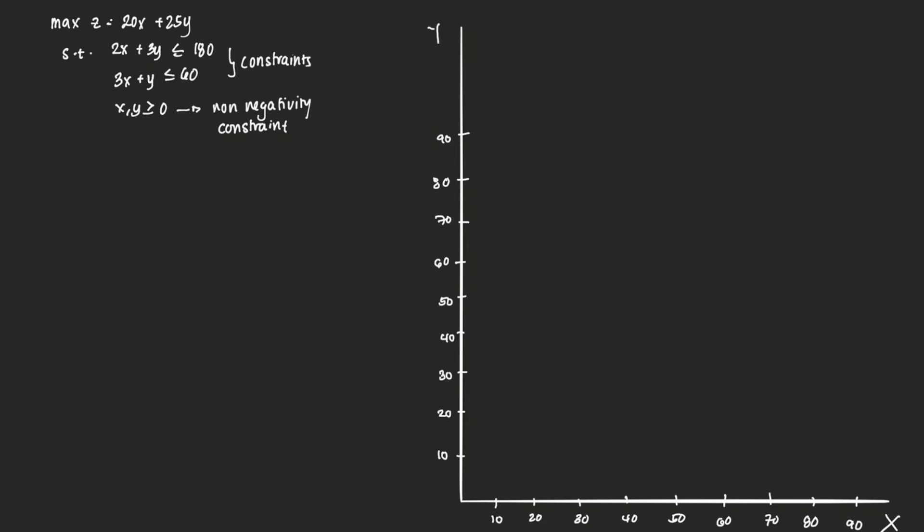Good day to everyone. Today we are going to discuss linear programming, in particular graphing a feasible region. A feasible region contains the set of all feasible points based from a constraint and the non-negativity constraint.